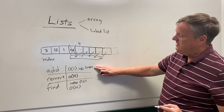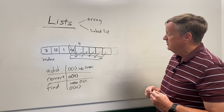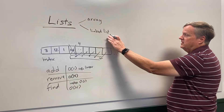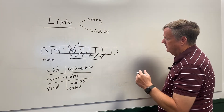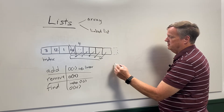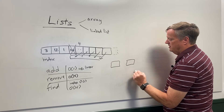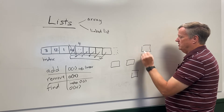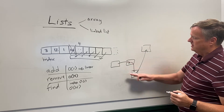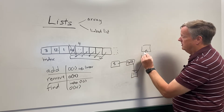So in an array, most operations are linear. You can add to the end in constant time unless you run out of memory, in which case it also becomes linear. Now let's talk briefly about linked lists. I won't go too deep into them because they're rather uncommon — I almost never use them — but they do exist.